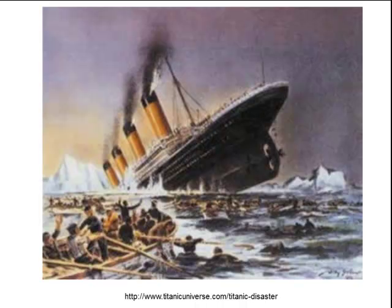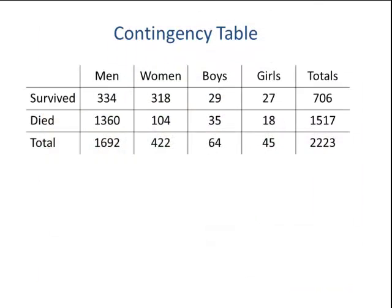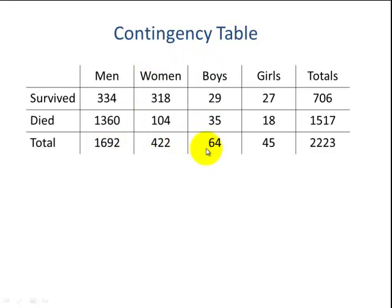The example we're going to use is the data from the Titanic. We can see these are two categorical variables: who survived the Titanic, with a total of 706, and who died, with a total of 1,517. The grand total of people on the Titanic was 2,223. Comparing against gender: men totaled 1,692; women, 422; boys, 64; girls, 45.